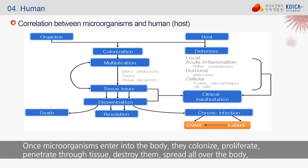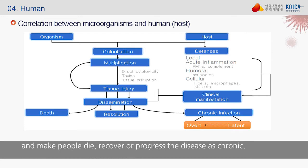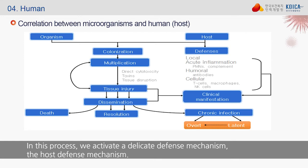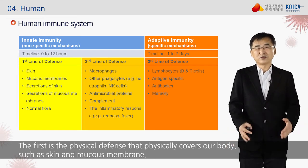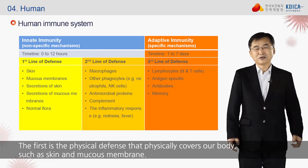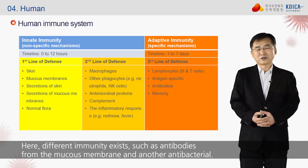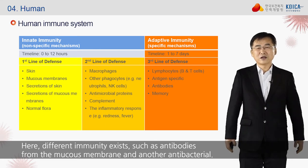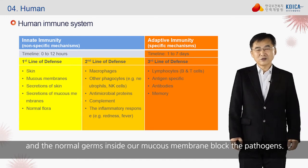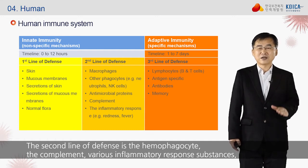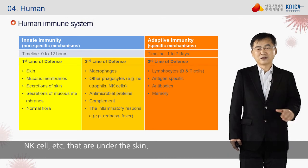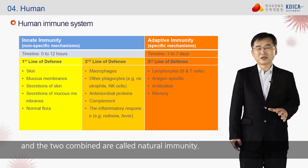Once microorganisms enter the body, they colonize, proliferate, penetrate tissue, destroy it, spread throughout the body, and make people die, recover, or progress to chronic disease. In this process, we activate a delicate host defense mechanism. Our immune system consists of three steps. The first is physical defense — skin and mucous membrane — which includes antibodies from the mucous membrane and normal germs that block pathogens. The second line of defense is the hemophagocyte, complement, inflammatory response substances, and NK cells under the skin. These two combined are called natural immunity.